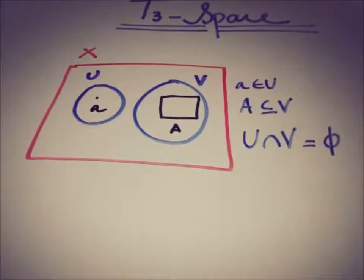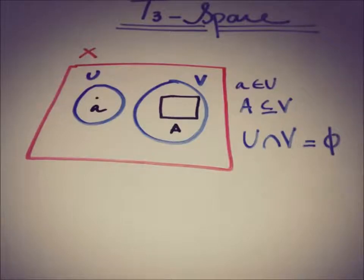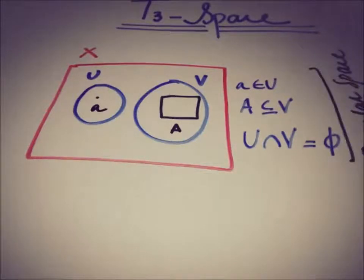So this is the definition of a regular space: there must be two separate or disjoint open sets where one open set contains the point and the other open set is a superset of the closed set. Now that we have the concept of regular spaces, we can define the T3 space.